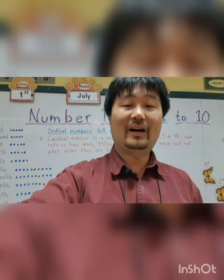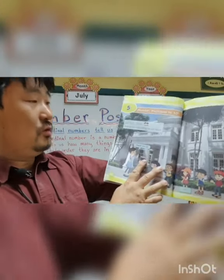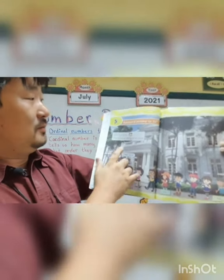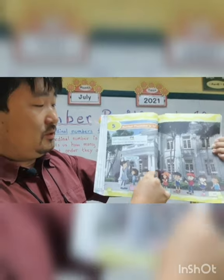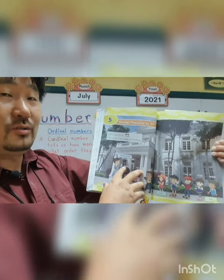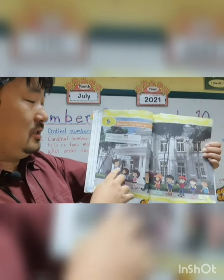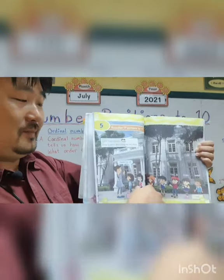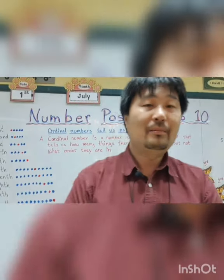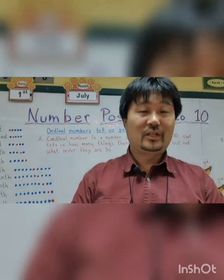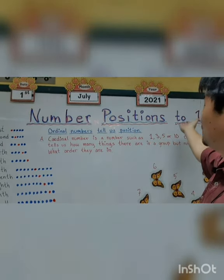So now today we're going to start a new unit. We're going to start with Unit 5 in your books. So if you take out your books and look at page 102. So here, number positions to 10th. Some students are visiting the art house. This is the art house and the teacher tells the students, please line up. So they line up. They make a queue. So today I'm going to talk about number positions to 10, which the unit is called, and I have written on the board: number positions to 10.